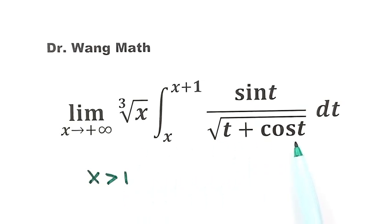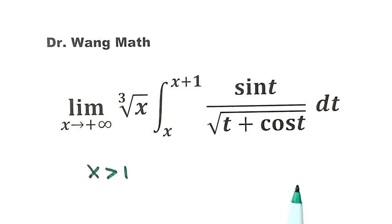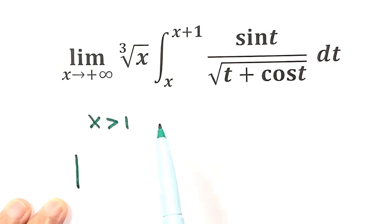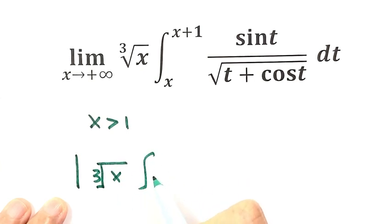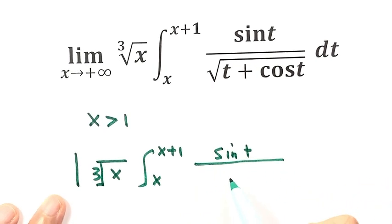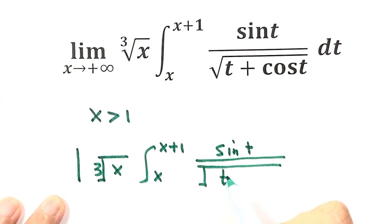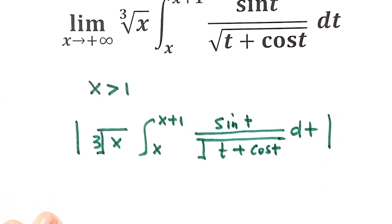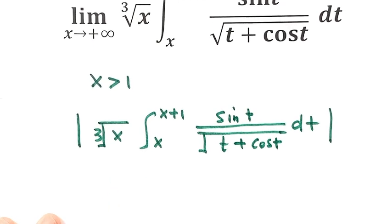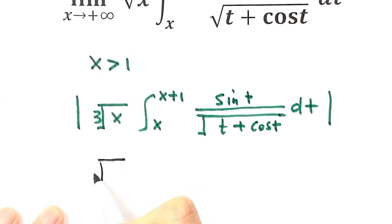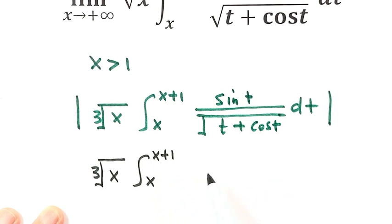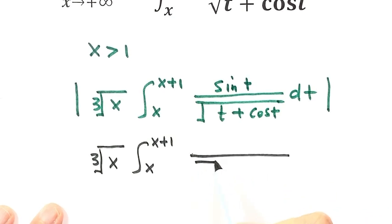Now let's look at the range of this function by taking the absolute value. So here we take the absolute value of this function. We have the third root of x, then the integral from x to x plus 1 of sin t divided by the quantity t plus cosine t, dt. Because x is bigger than 1, the third root of x is positive, the lower bound x is positive, the upper bound x plus 1 is positive, and the square root is positive.